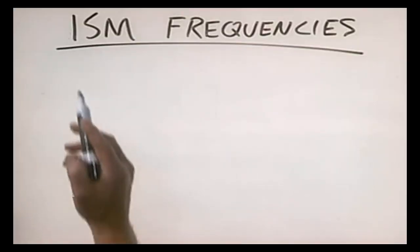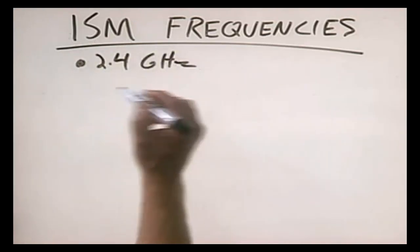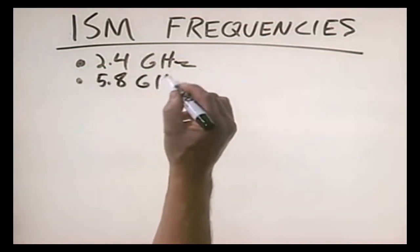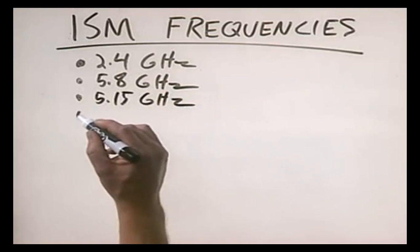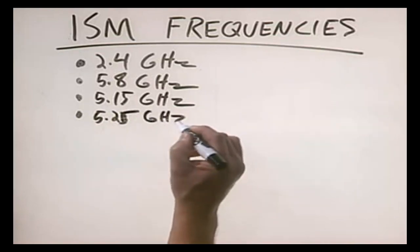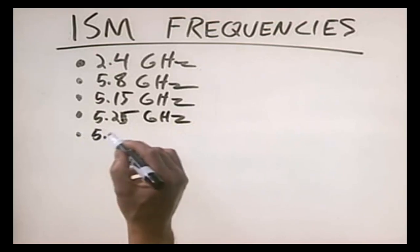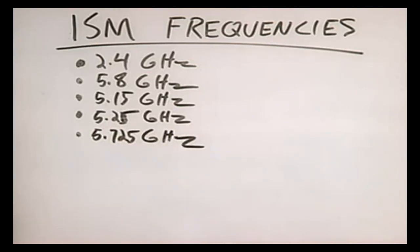Wireless networks in the USA use frequency ranges specified by the Federal Communications Commission for industrial, scientific, and medical use — sometimes abbreviated as ISM frequencies. These include the 2.4 gigahertz range, the 5.8 gigahertz range, the 5.15 gigahertz range, the 5.25 gigahertz range, and the 5.725 gigahertz range. Most of the wireless networking equipment you'll work with operates in the 2.4 gigahertz range.